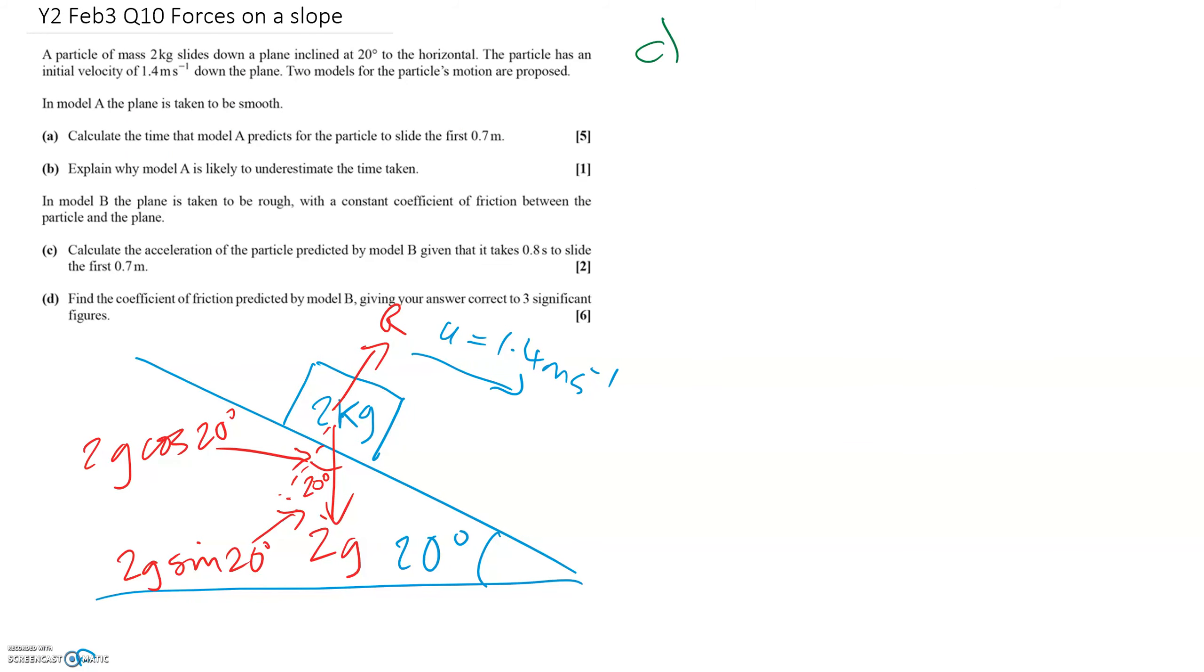And now, in part C, we've just added this frictional force here. It's no longer being taken smooth. It's now considered a rough slope, so we need to add that frictional force in, which will be opposing the direction of motion. And the question says, calculate the acceleration of the particle, given it takes 0.8 seconds to slide 0.7 meters. So if we write down what we know, we know the time is 0.8, we know the displacement is 0.7, we know U is 1.4, and we know the acceleration is A.